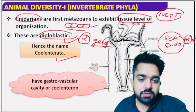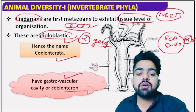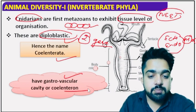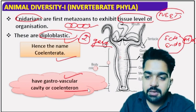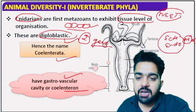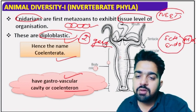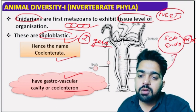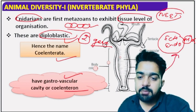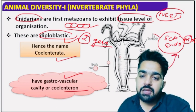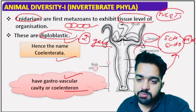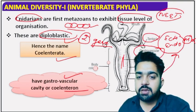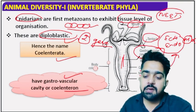They have a gastrovascular cavity, also called coelenteron. This is a cavity-like structure. In this structure, gastrodermis, mesoglea, ectoderm, and endoderm are present. Epidermis is also present. There are tentacles around the opening. The gut is the gastrovascular cavity, and there is a mouth opening.